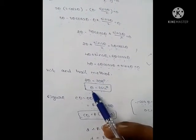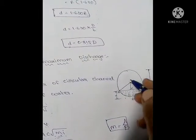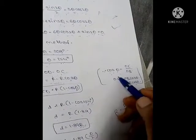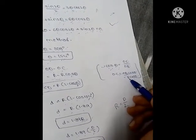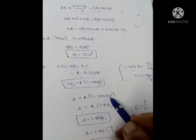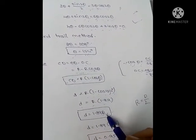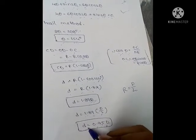Solving by the hit and trial method, we get 2θ = 308°, so θ = 154°. From the figure, CD = OD − OC = R − Rcosθ = R(1 − cosθ). Substituting θ = 154° gives d = 1.89R. Since R = D/2, small d = 1.89 × D/2 = 0.95D. This is the depth of water for maximum discharge.